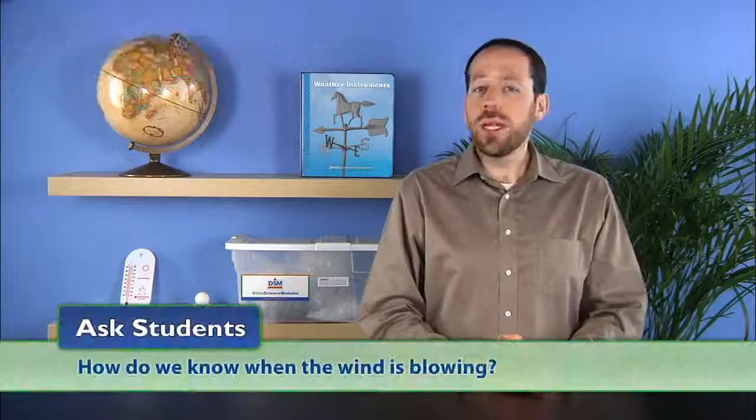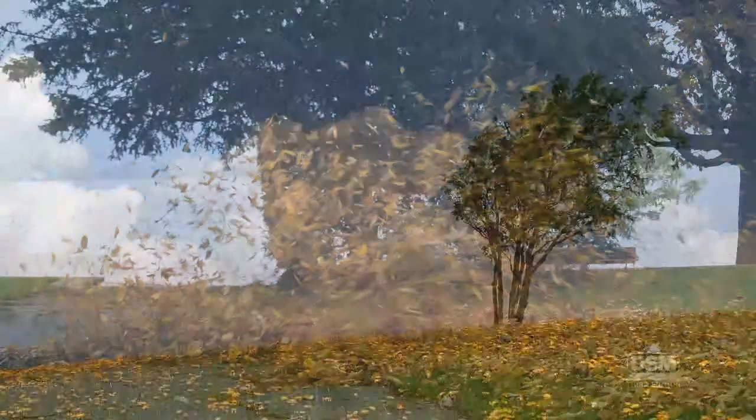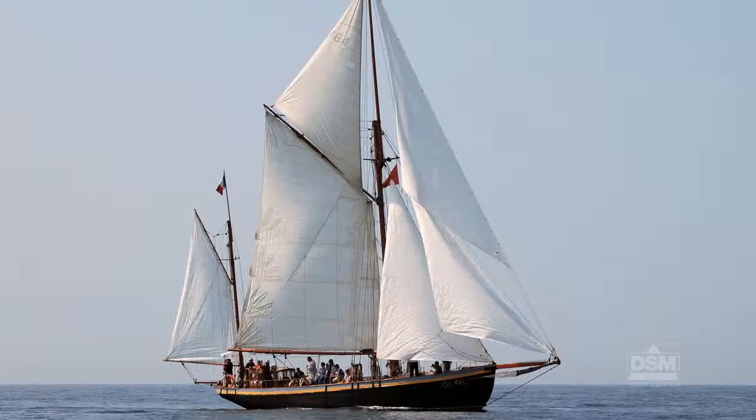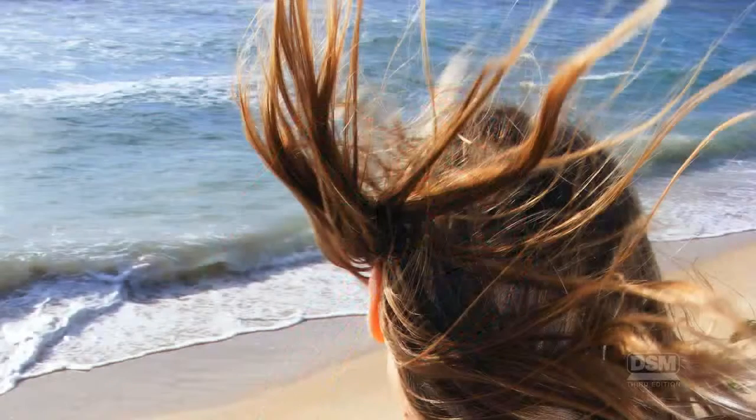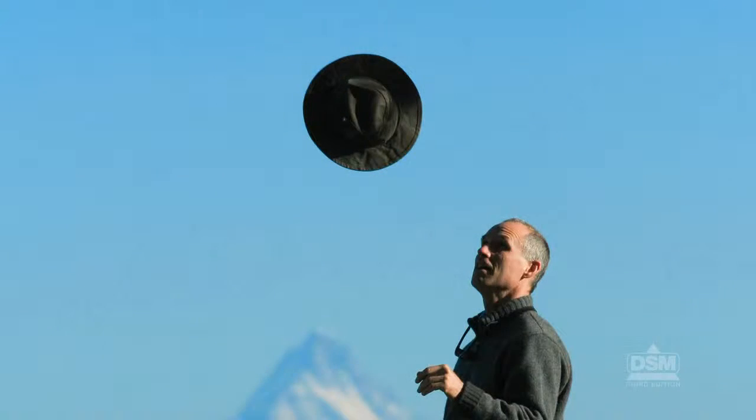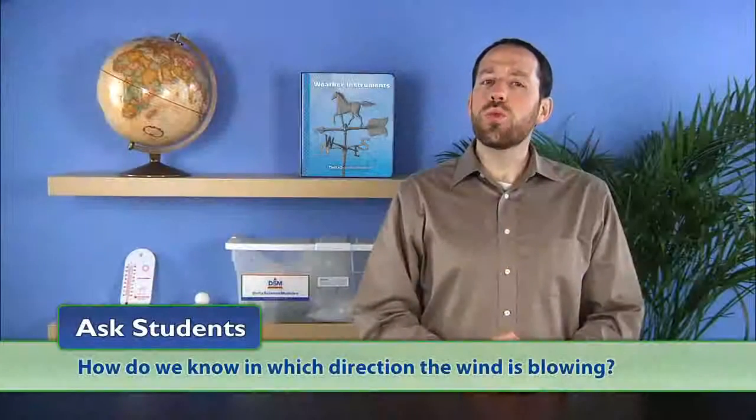To begin the activity, ask students: How do we know when the wind is blowing? Students might suggest that the wind blows and moves leaves, trees, sailboats, windsocks, kites, long hair, or hats. Ask, how do we know in which direction the wind is blowing? Guide students to understand that the objects blown by the wind are moved in the same direction that the wind is blowing. Further explain that scientists name the direction of a wind by the direction from which it comes. That is, a north wind comes from the north traveling southward.